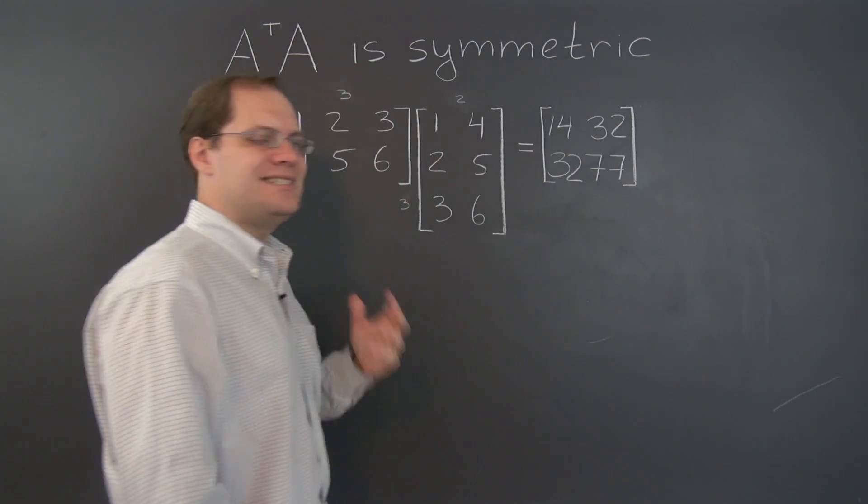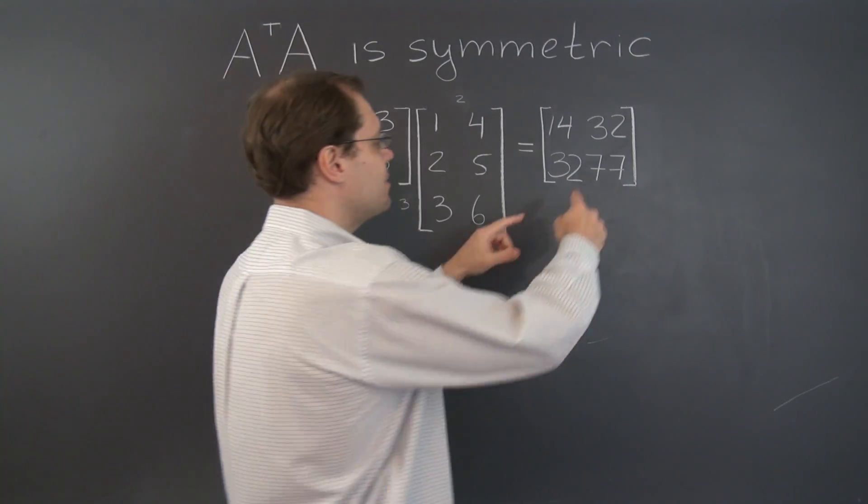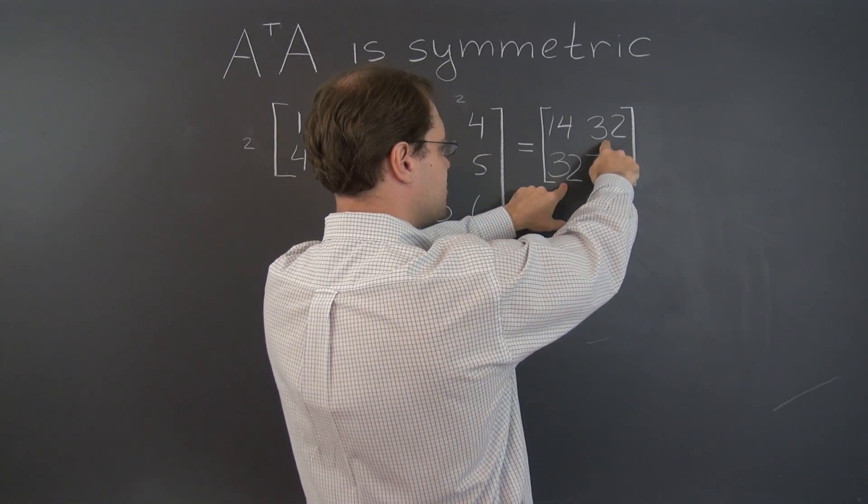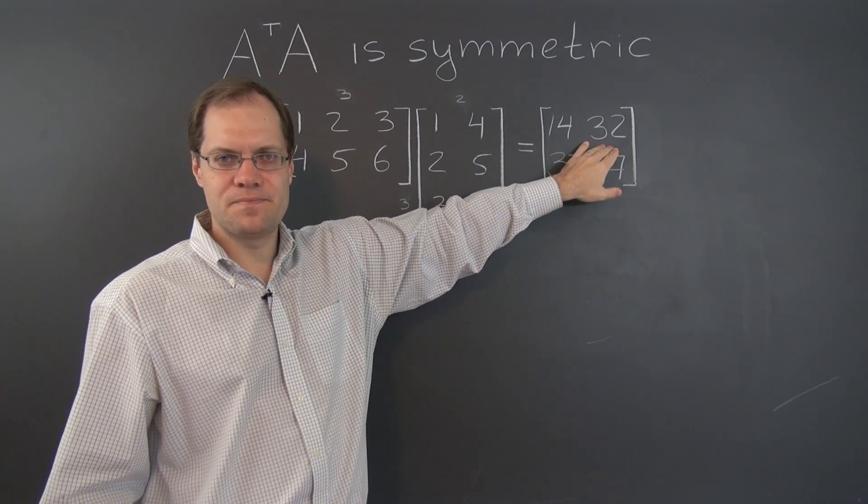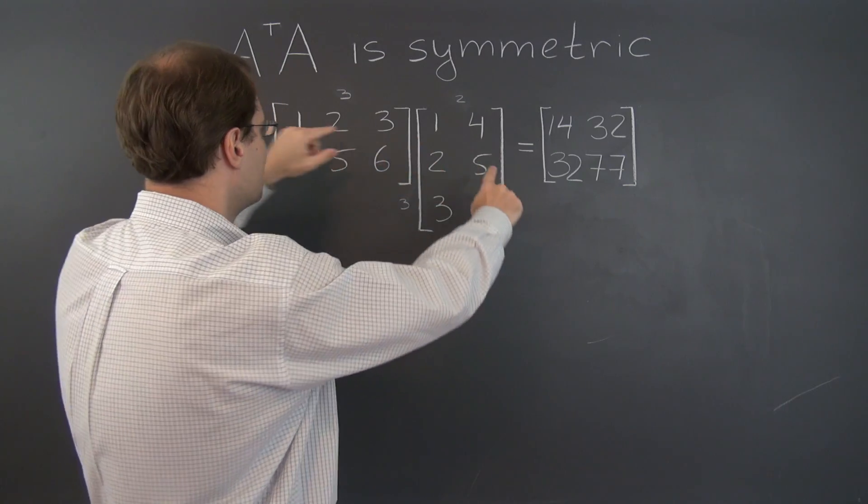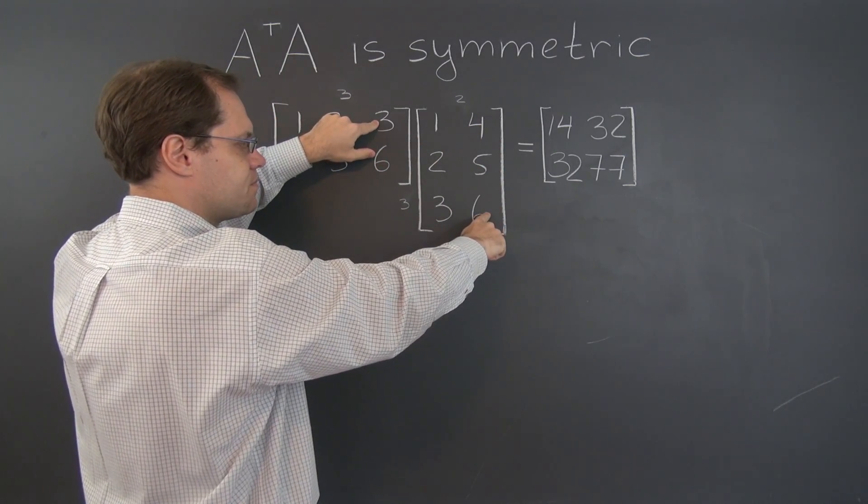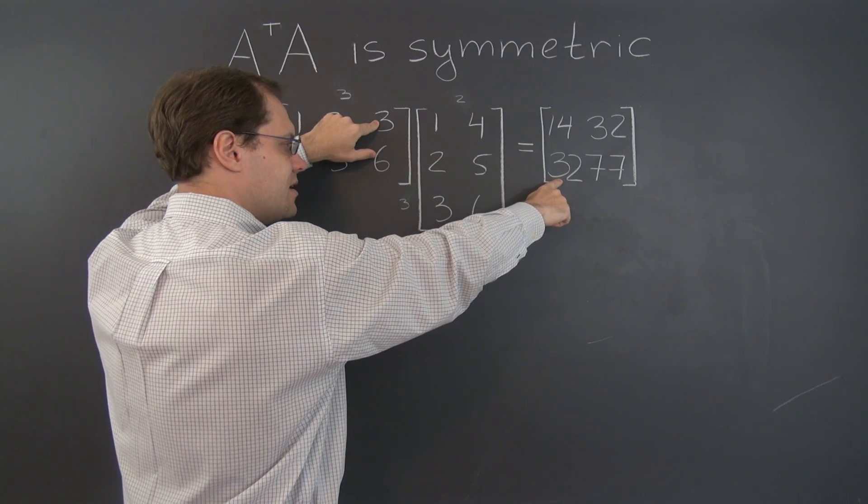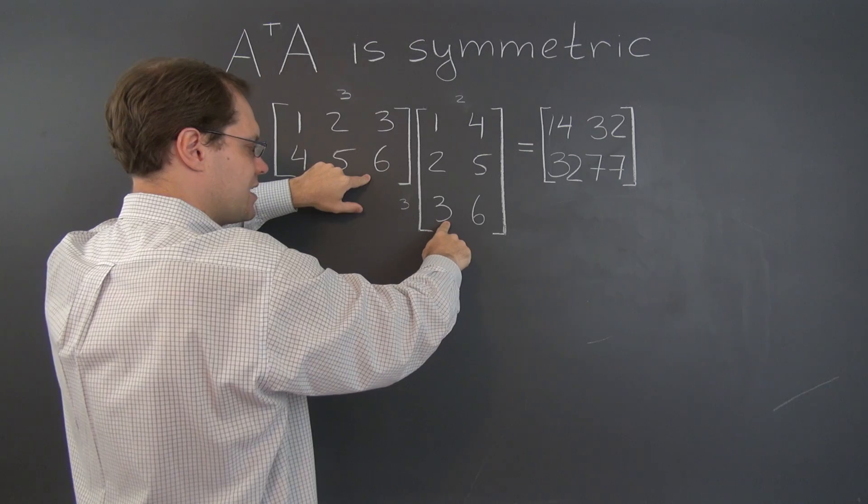This matrix is indeed symmetric, and you saw exactly how it happened. Now can we summarize in words why these two entries are the same? Well, that's because this entry is the dot product of the first row here and the second column here. And this entry equals the dot product of the second row here and the first column here.